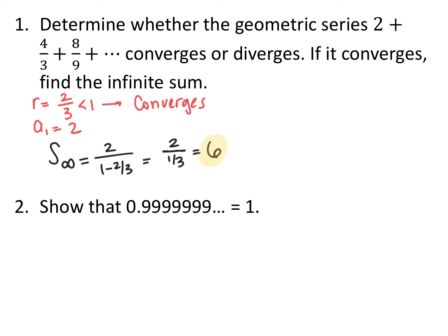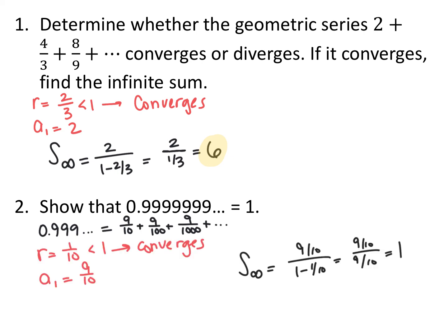We can also use this to show that 0.999 repeated forever is actually equivalent to 1. We can rewrite 0.999... as the series 9/10 + 9/100 + 9/1000 on forever. This geometric series has a common ratio of 1/10 (less than 1, so it converges) and a first term of 9/10. Using the infinite sum formula: (9/10) ÷ (1 − 1/10) = (9/10) ÷ (9/10) = 1. Therefore 0.999... is equivalent to 1.